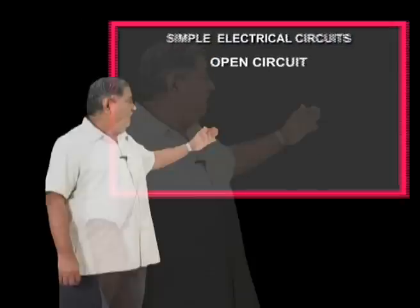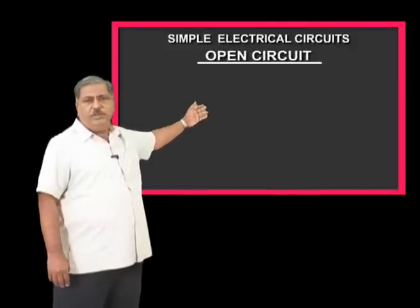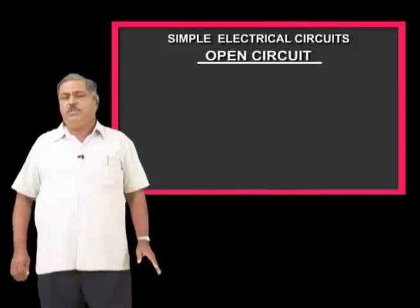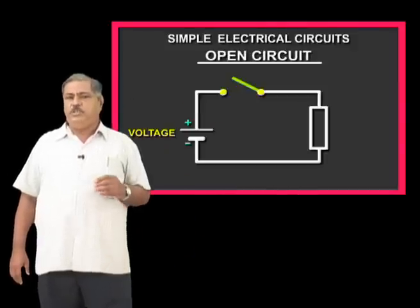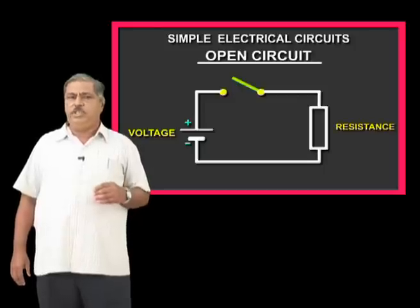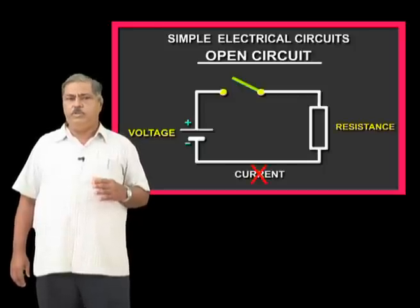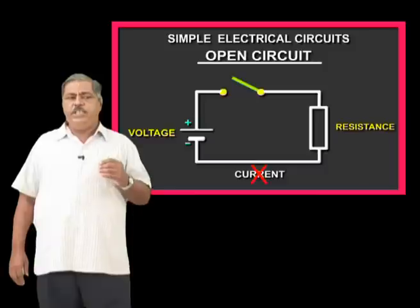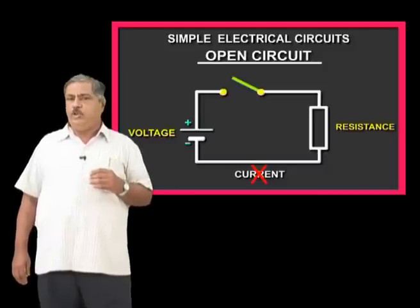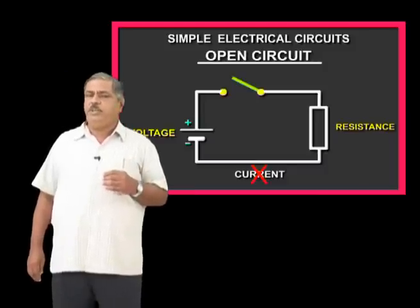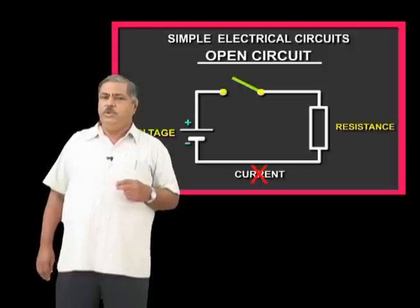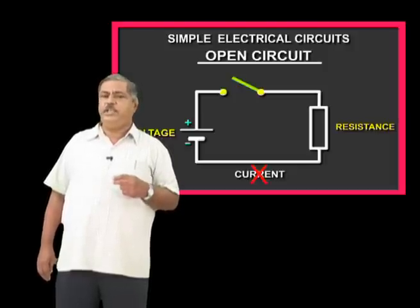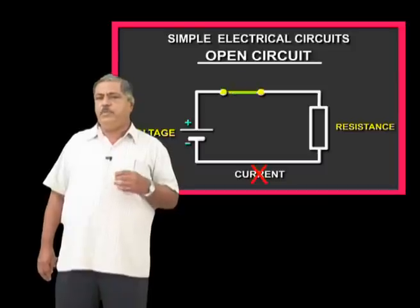The second one is an Open Circuit. What is the open circuit? There is voltage and resistance, but the current does not flow. There are conductors, but the conductors are disconnected.